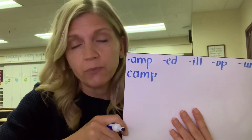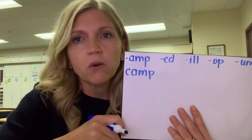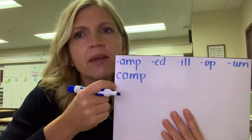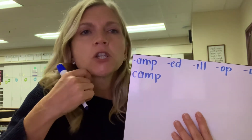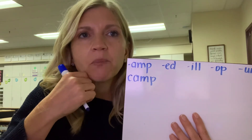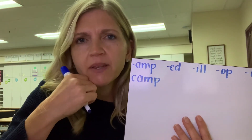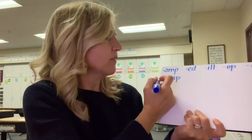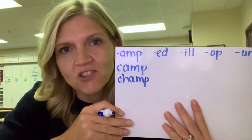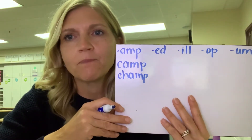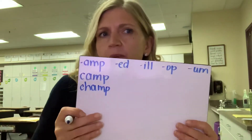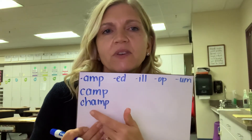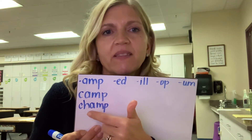Below camp — do not erase it. Below camp, if I know how to write camp, how would I write champ? It starts with the digraph CH — ch, ch — amp. Write it down. Let's see if yours looks like mine. C-H-A-M-P. The only thing different in that one was the H.